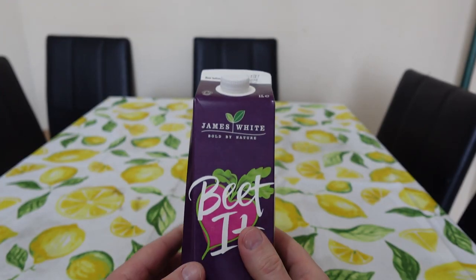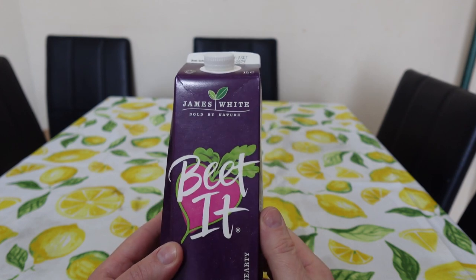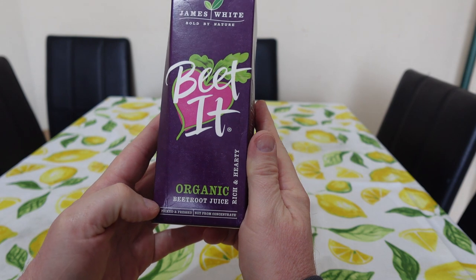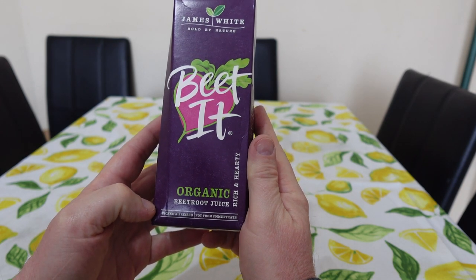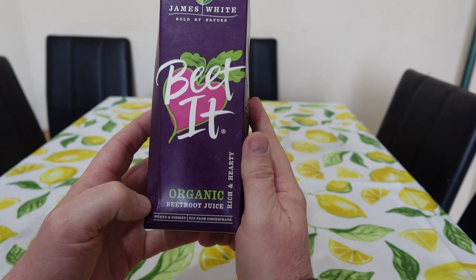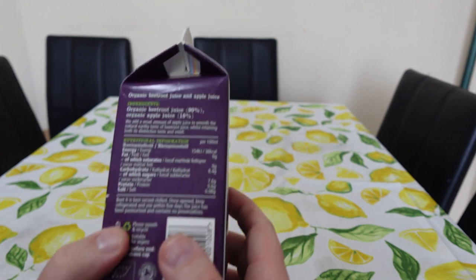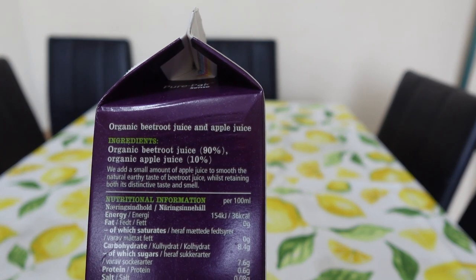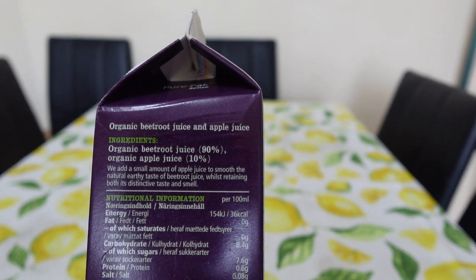Before I start taking my blood pressure, just have a look at this. This looks like the best option I could see - organic beetroot juice, picked then pressed, not from concentrate. So there's the ingredients: basically 90% beetroot juice organic and 10% apple juice.